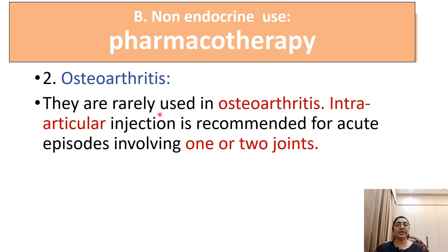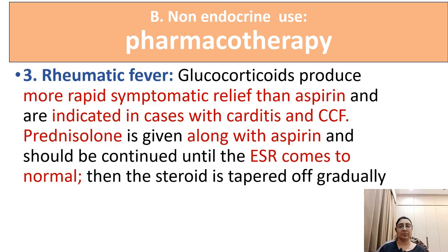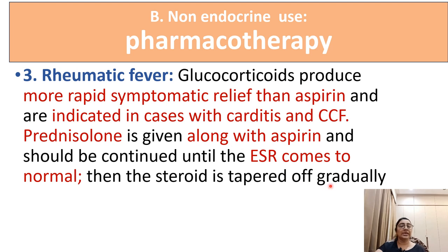Glucocorticoids are rarely used in osteoarthritis; intra-articular injection can be recommended for acute episodes involving one to two joints. In rheumatic fever, glucocorticoids produce more rapid symptomatic relief than aspirin and are indicated in cases with carditis and congestive heart failure. Prednisolone is given along with aspirin and should be continued until the ESR returns to normal, then the steroid is tapered gradually.